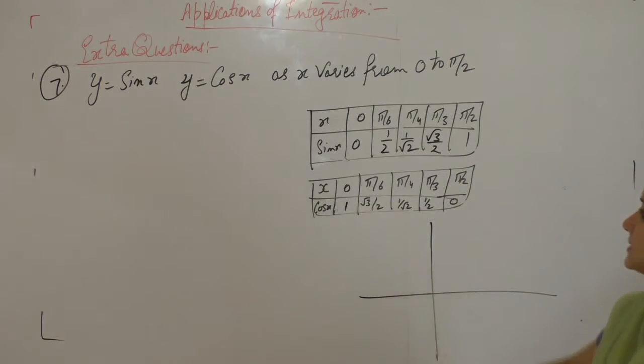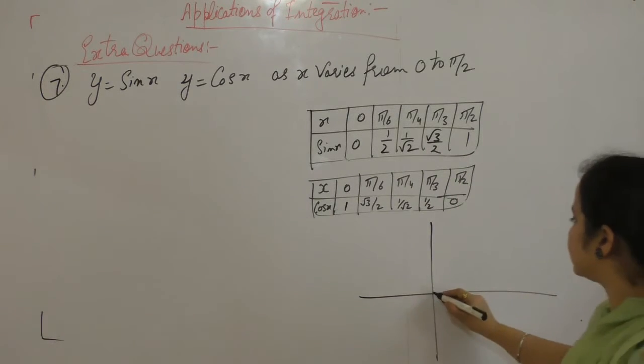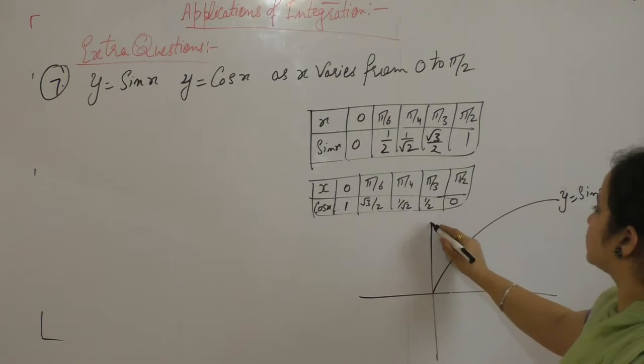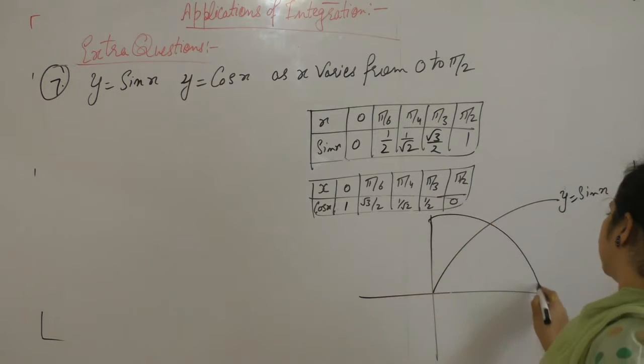Y is equal to sin x, 0 to 1, the curve is increasing. For Y is equal to cos x, the curve is decreasing.